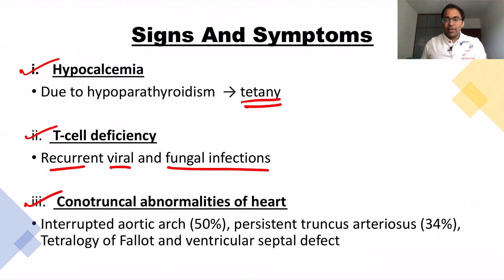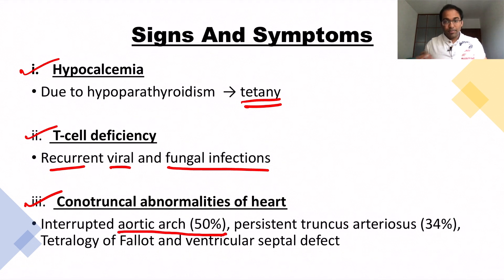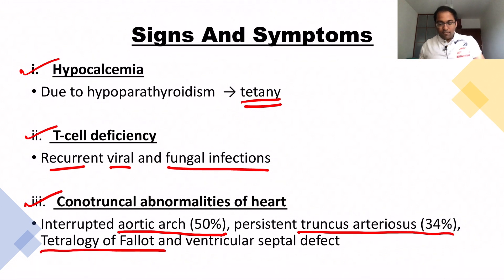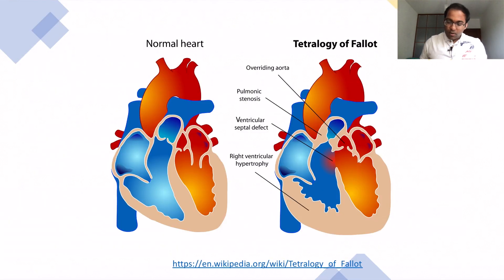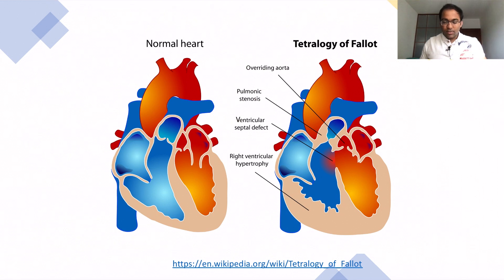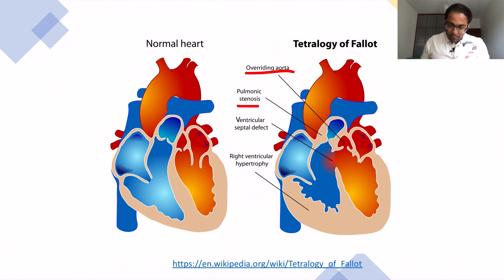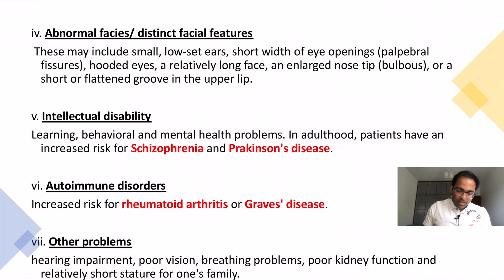Cardiac defects involve conotruncal abnormalities such as interrupted aortic arch, seen in 50% of patients; persistent truncus arteriosus, seen in 34% of patients; and tetralogy of Fallot with VSD. Tetralogy of Fallot includes four components: overriding aorta, pulmonic stenosis, ventricular septal defect, and right ventricular hypertrophy.